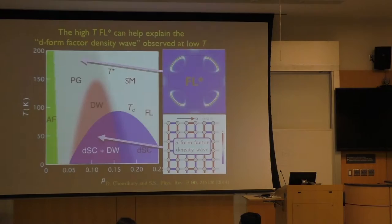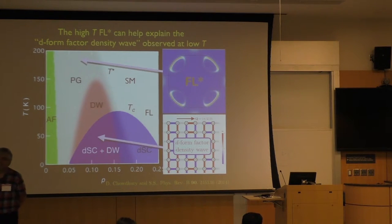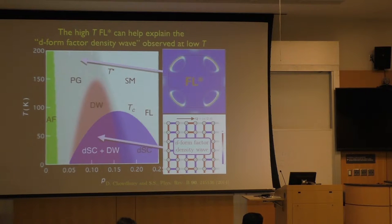What probably happens is that as you go down, there's some kind of confinement crossover. So you probably don't expect it to work down here because this state down here is probably confining — you really should do it up there. Question: In tunneling, there will be no difference between the front side and the back side? Answer: In tunneling there is a difference, because that involves moving an electron from the sample. That's why you don't see QPI.